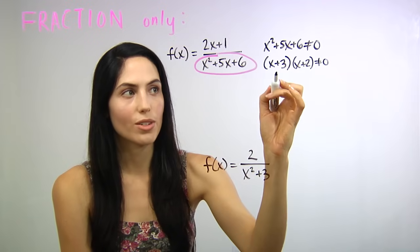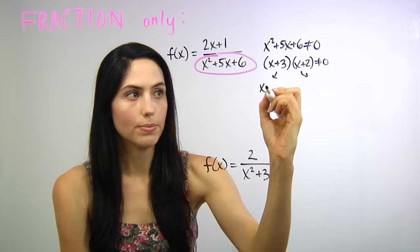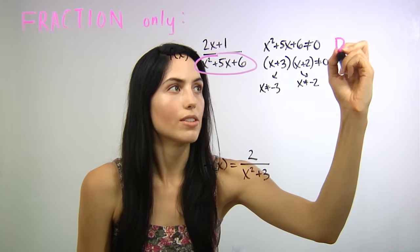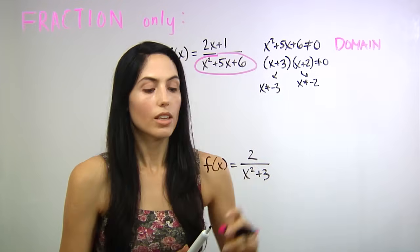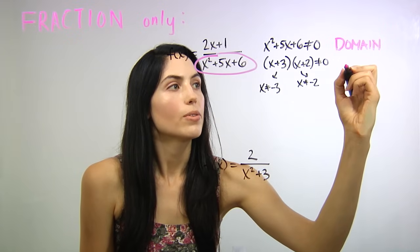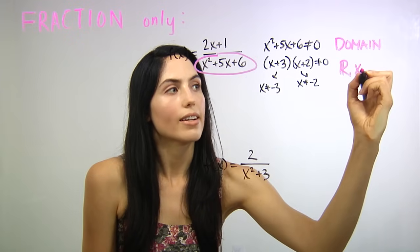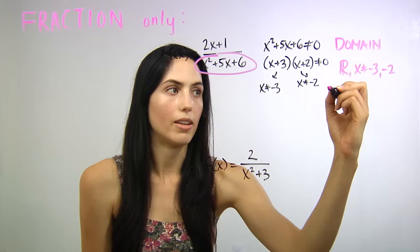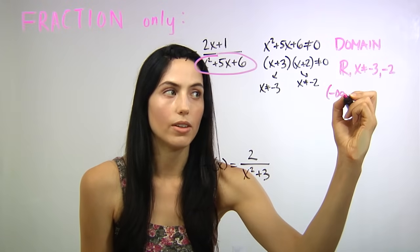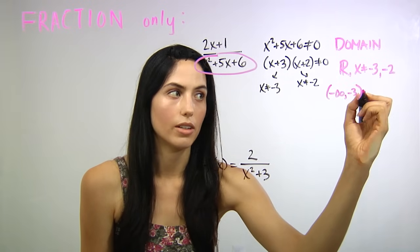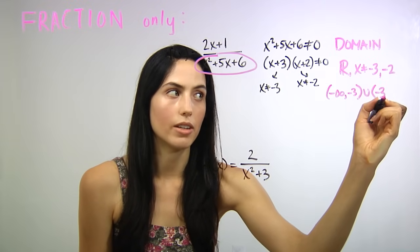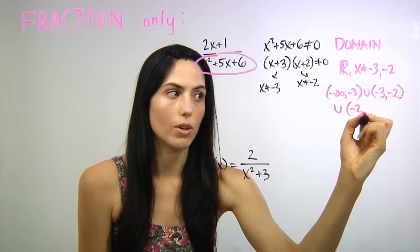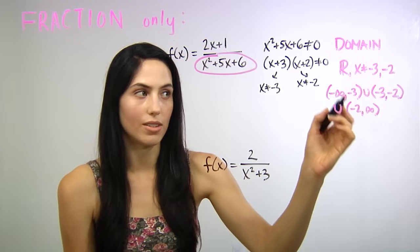In this equation, we get two restrictions: x cannot equal negative 3, and x cannot equal negative 2. So when we write the domain, the final answer, you can write it as 'all real numbers, but x cannot equal negative 3 and cannot equal negative 2.' Or you can use interval notation: everything from negative infinity up to negative 3, combined with everything from negative 3 to negative 2 (not inclusive of either), combined with everything from negative 2 to infinity. Either of these notations is fine — they mean the same thing.